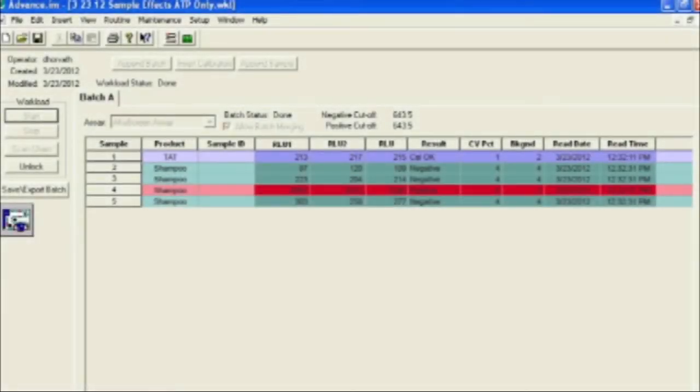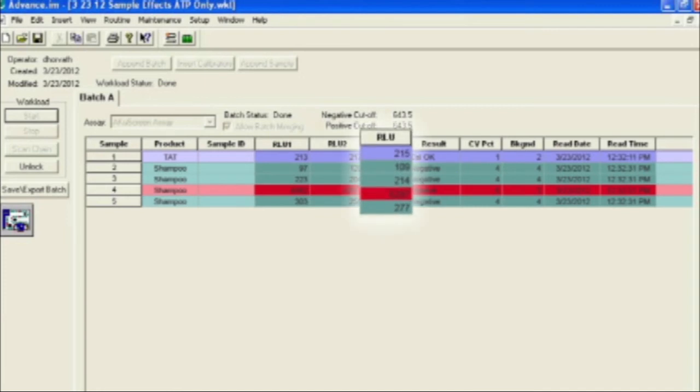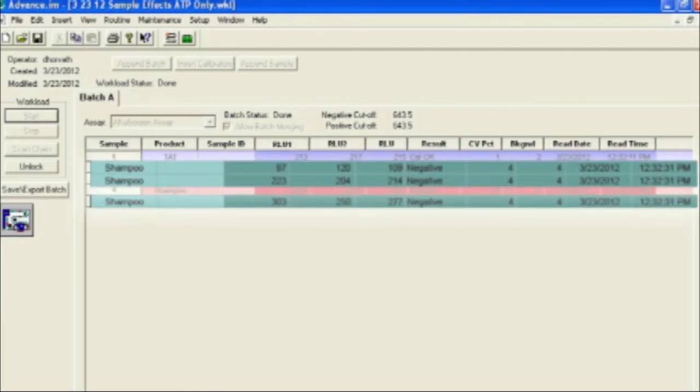The grid view records the specific relative light units, or RLU value, for each replicate, as well as the average of the two readings. Positive results for the AccuScreen assay are typically three times the broth calibrator, as confirmed during validation. Positive results are highlighted in red. In green are samples testing negative for contamination.